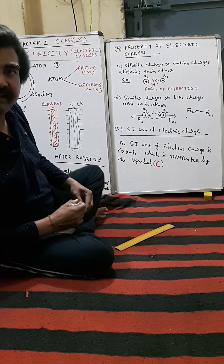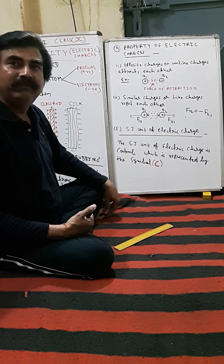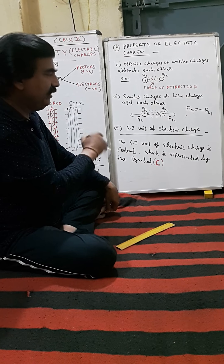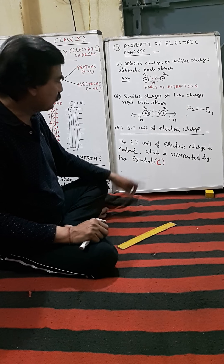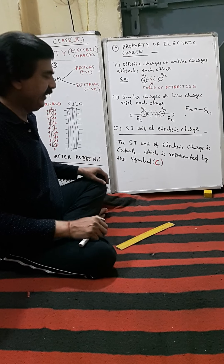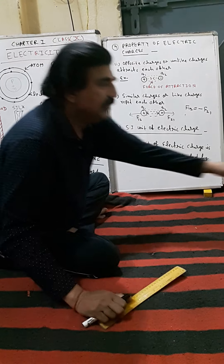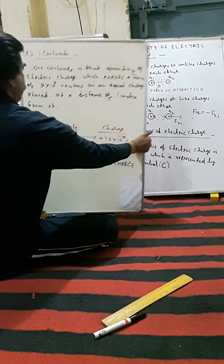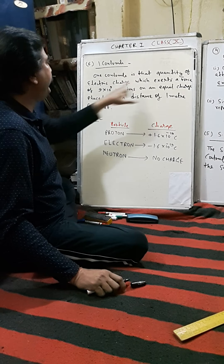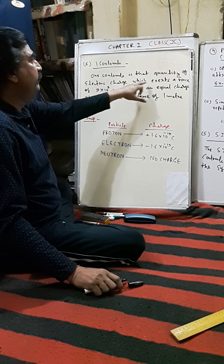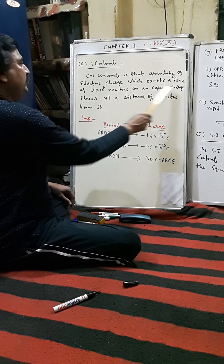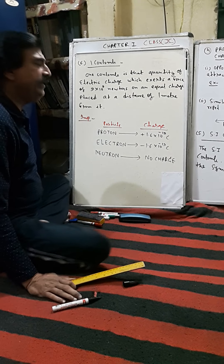The SI unit of electric charge is Coulomb, represented by the symbol C. It is named after scientist Coulomb. One coulomb is that quantity of electric charge which exerts a force of 9 × 10⁹ newtons on an equal charge placed at a distance of 1 meter from it.